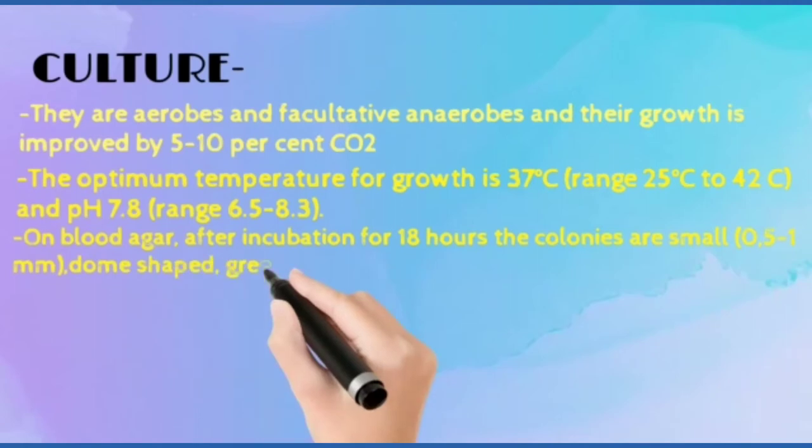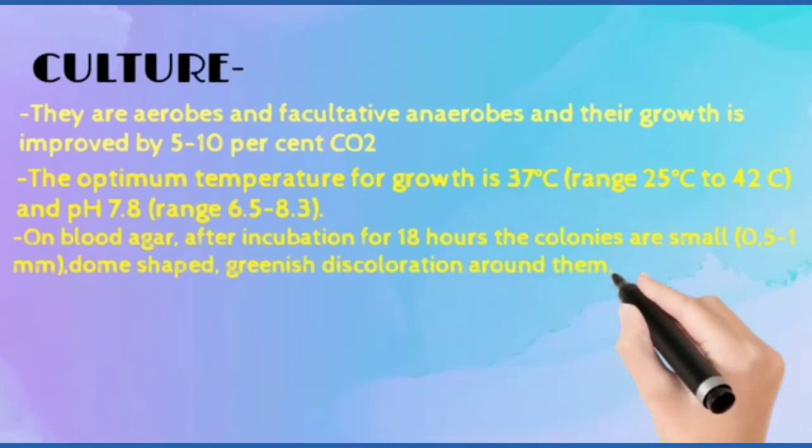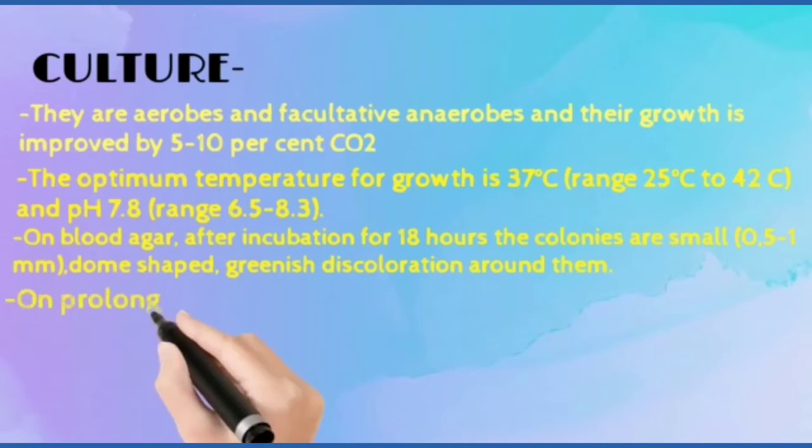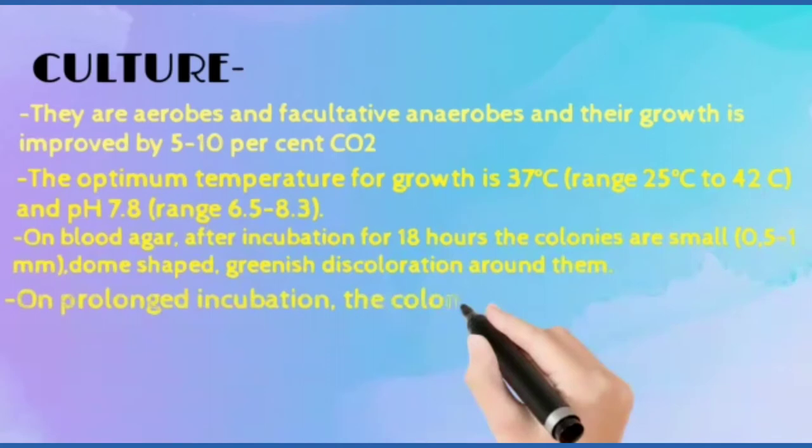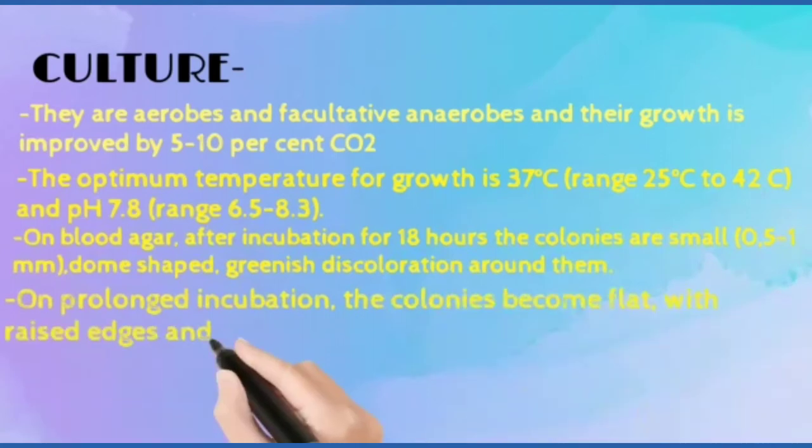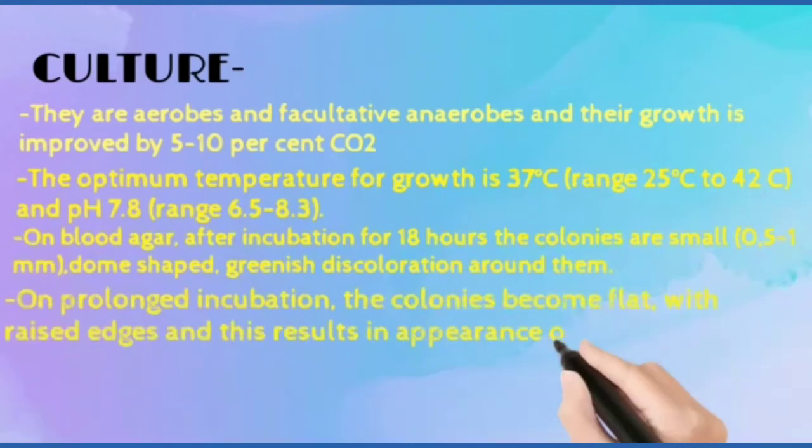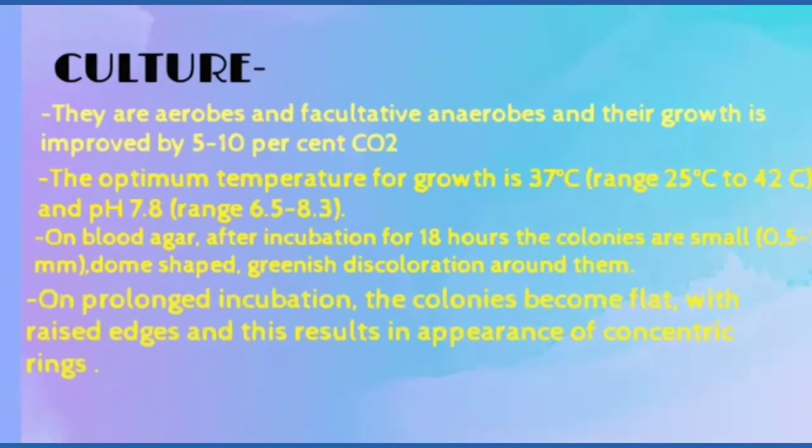On blood agar after incubation for 18 hours, these colonies are small, dome-shaped with greenish discoloration around them. On prolonged incubation, the colonies become flat with raised edges, resulting in appearance of concentric rings.